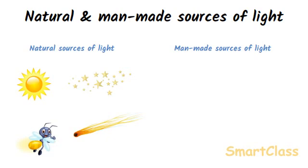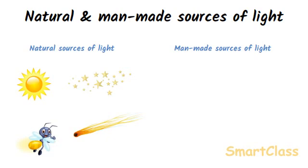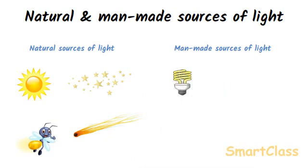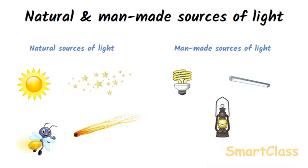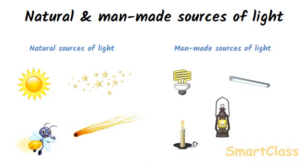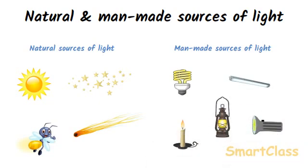Those sources of light which have been made by man are called manmade sources of light or artificial sources of light. Electric bulb, tube light, kerosene oil lamp, candle and torch are all manmade sources of light.